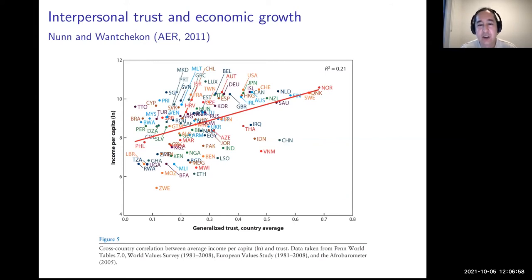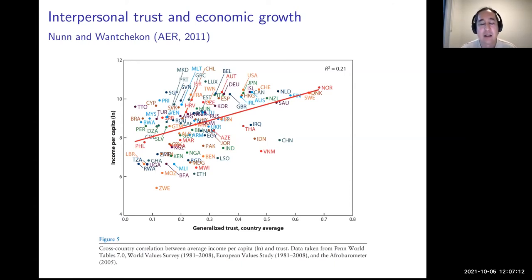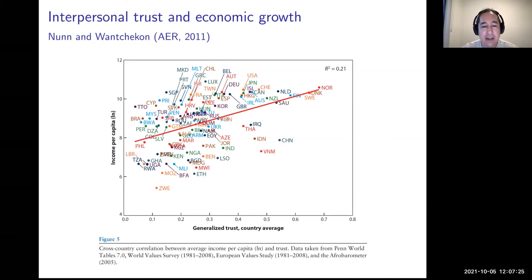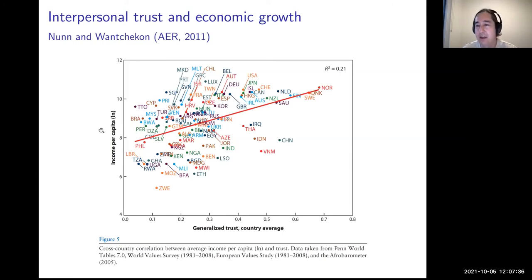I'll turn to a few other examples from my own work to show that mismatch is real and has first-order effects on global poverty. One of the largest determinants of economic growth and prosperity is the cultural trait of interpersonal trust. In order to engage in business and undertake any complex production, you need trust — suppliers and buyers need to trust one another. Cross-country data show a strong positive relationship between generalized trust and the natural log of income per capita.